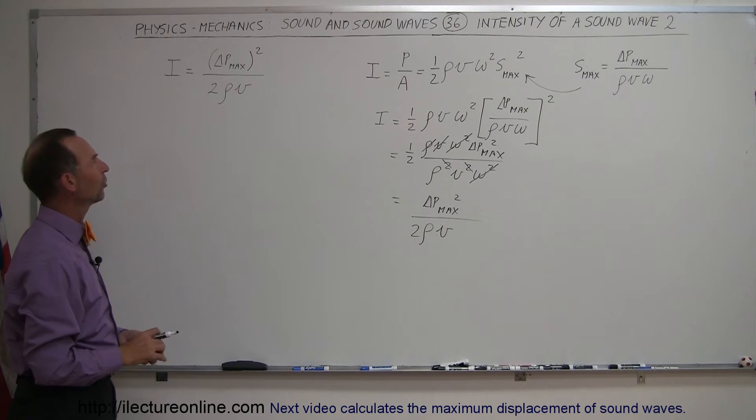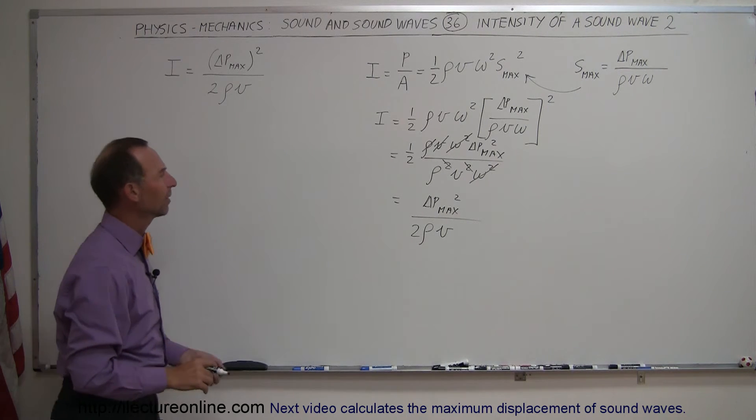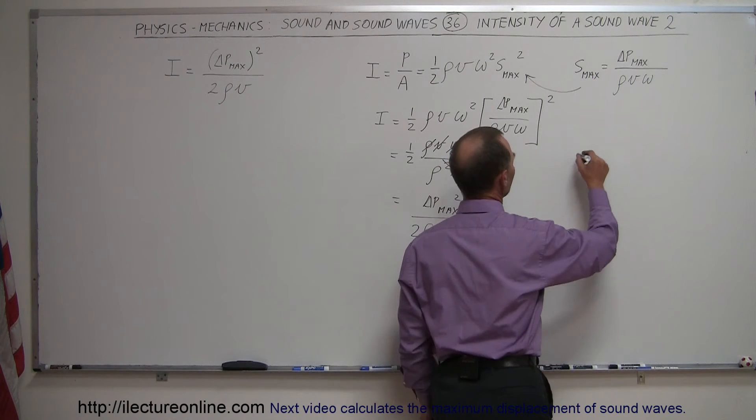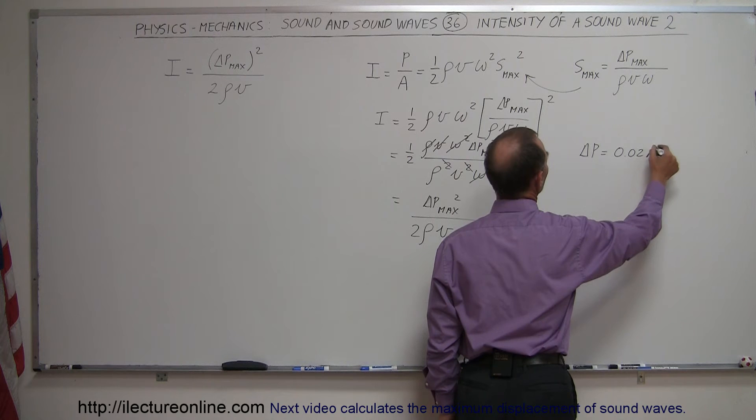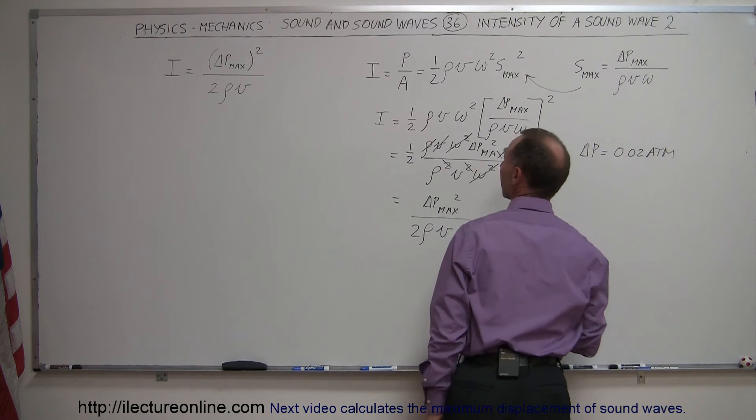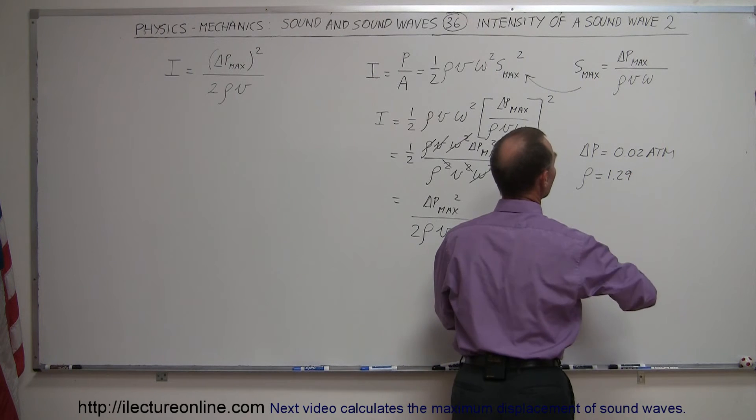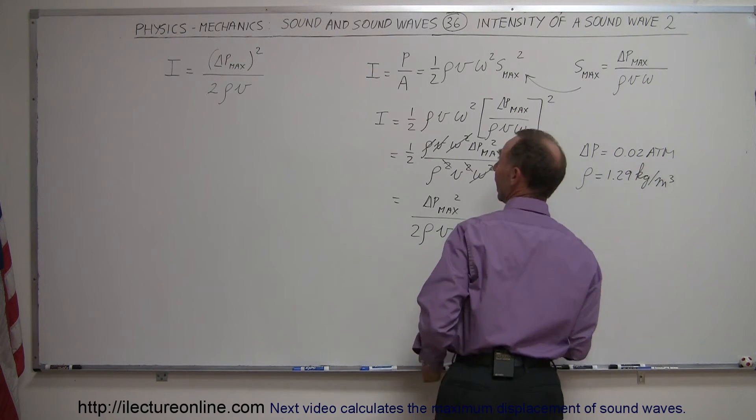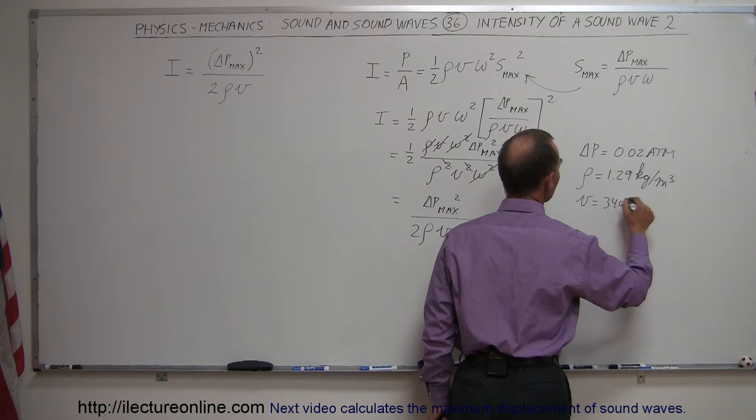So now I need some numbers to work with. Let's say that we have a pressure difference, delta P equal to 0.02 atmospheres, let's say that we have a density of air equal to 1.29 kilograms per cubic meter, and the velocity of sound in air is equal to 340 meters per second.